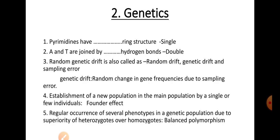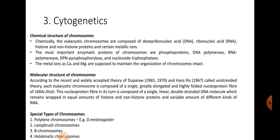Regular occurrence of several phenotypes in a genetic population due to the superiority of heterozygotes over homozygotes — where heterozygotes are found to be superior even to the parents — is called balanced polymorphism.